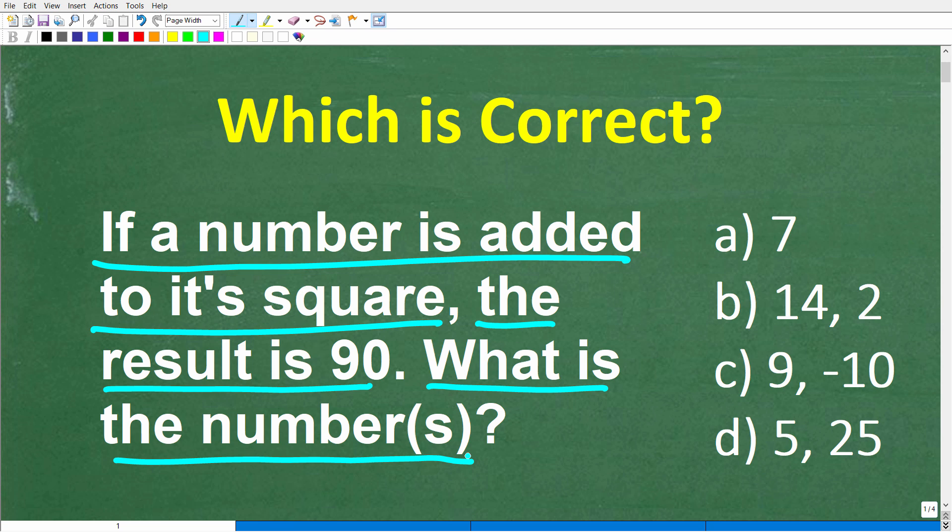That is the problem, but this is a multiple choice question. Let's go ahead and take a look at our choices. A is 7, B is 14 and 2, C is 9 and negative 10, and D is 5 and 25. Feel free to use a calculator. If you can figure it out, go ahead and put your answer in the comment section.